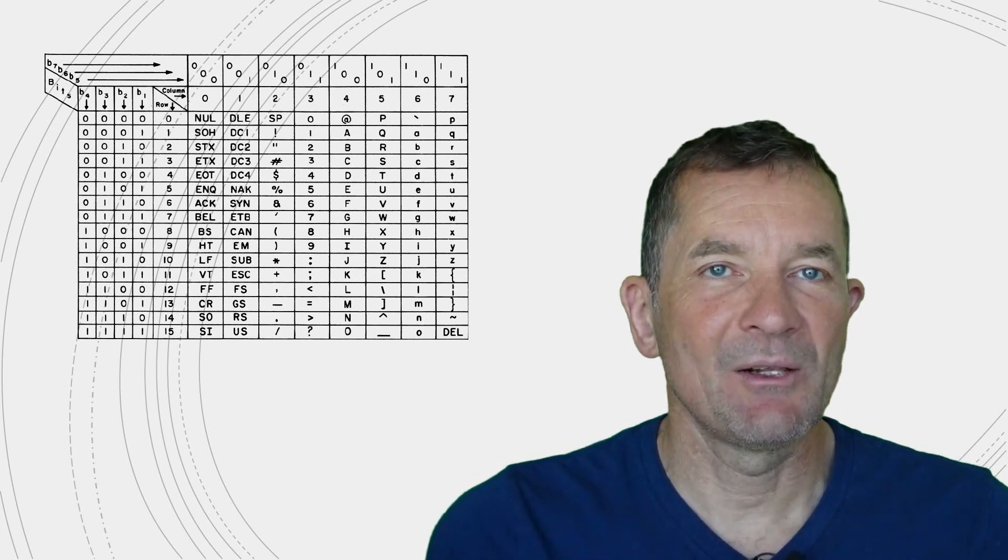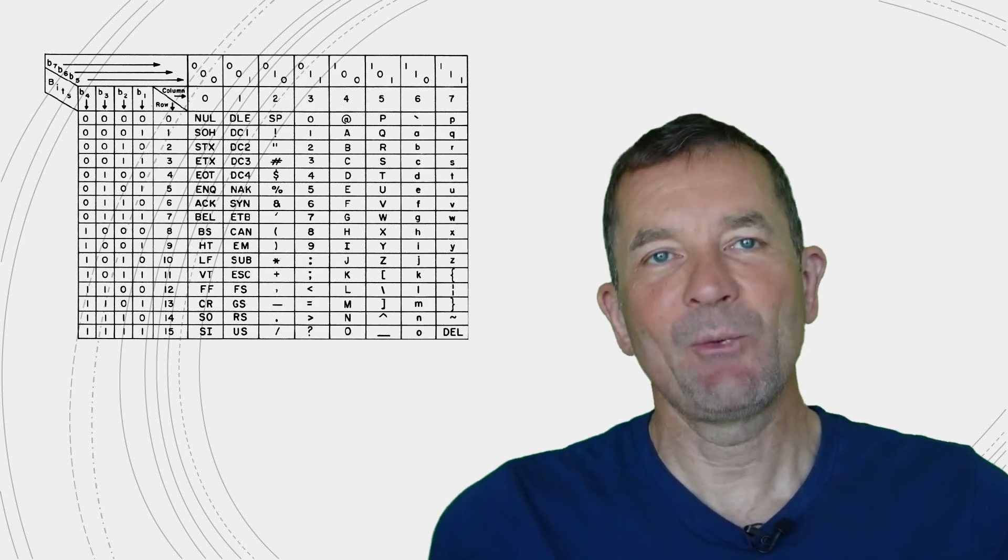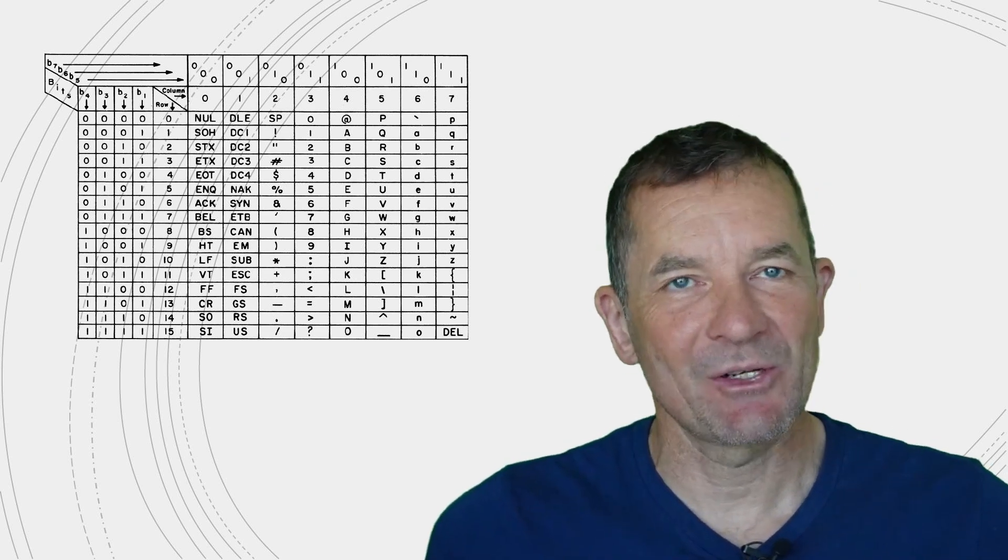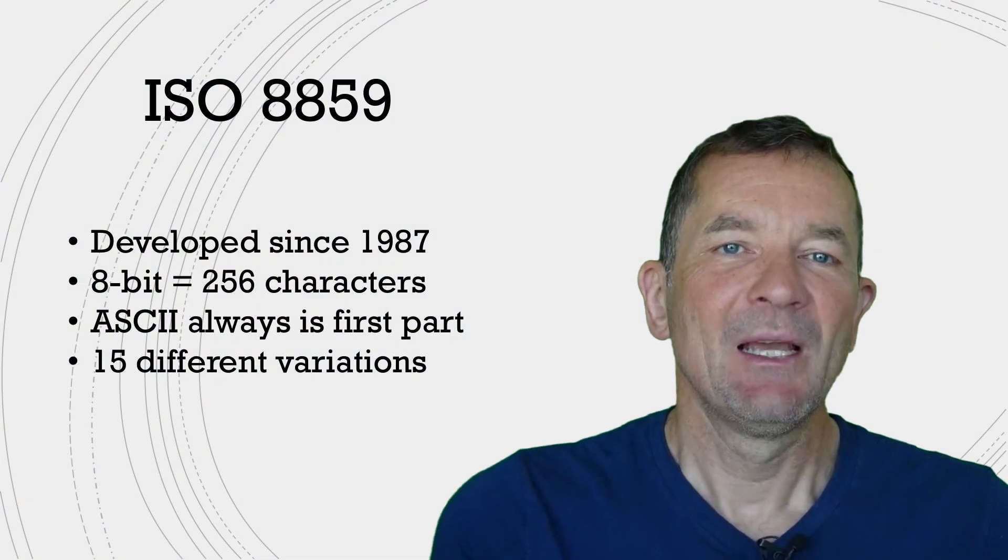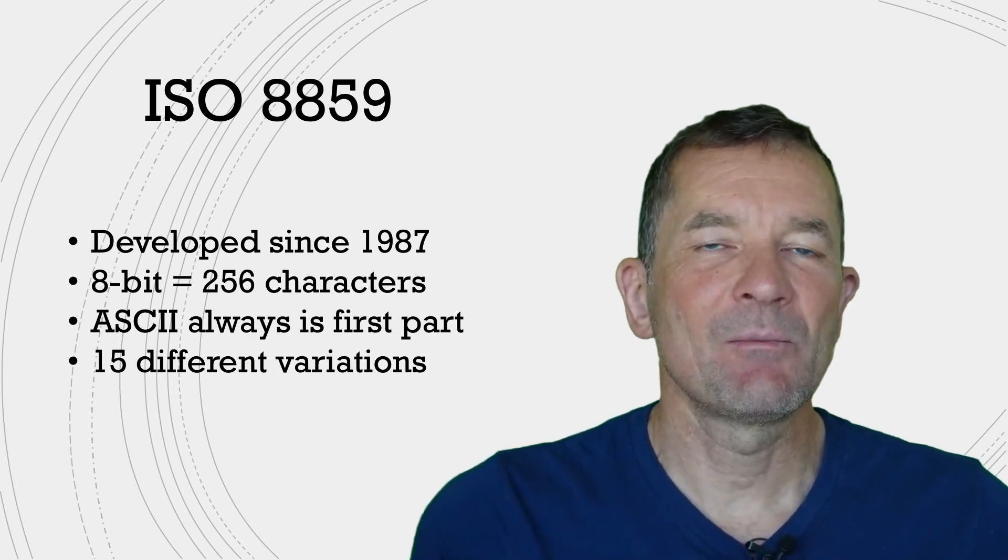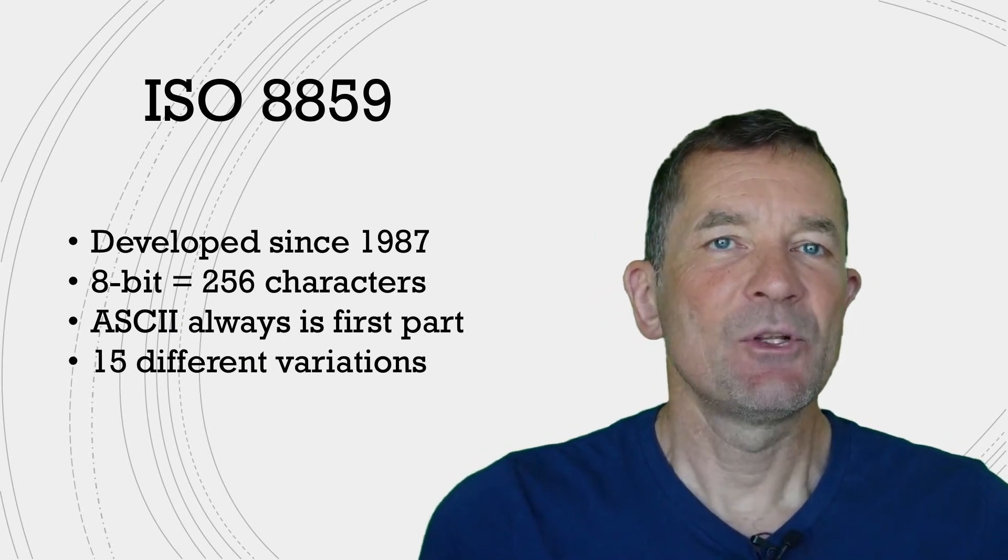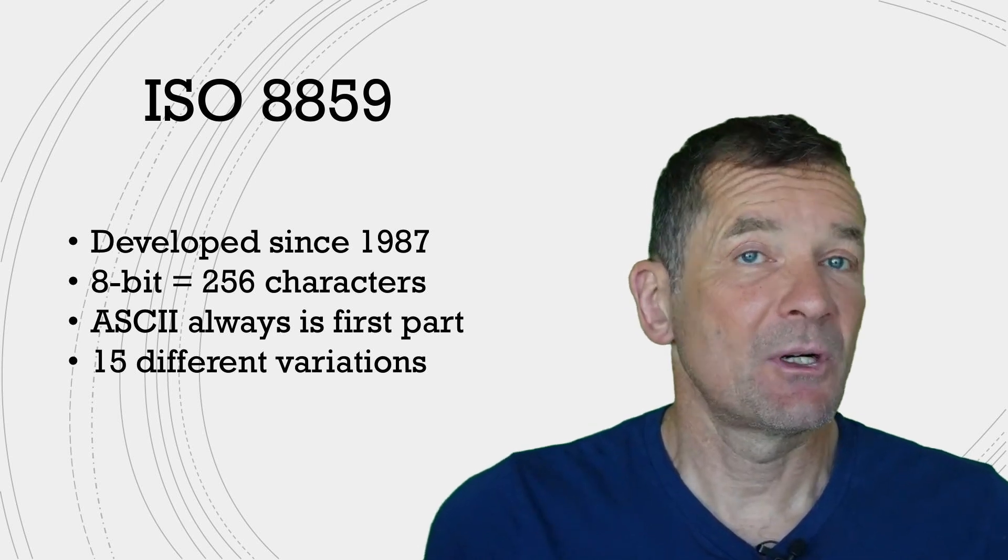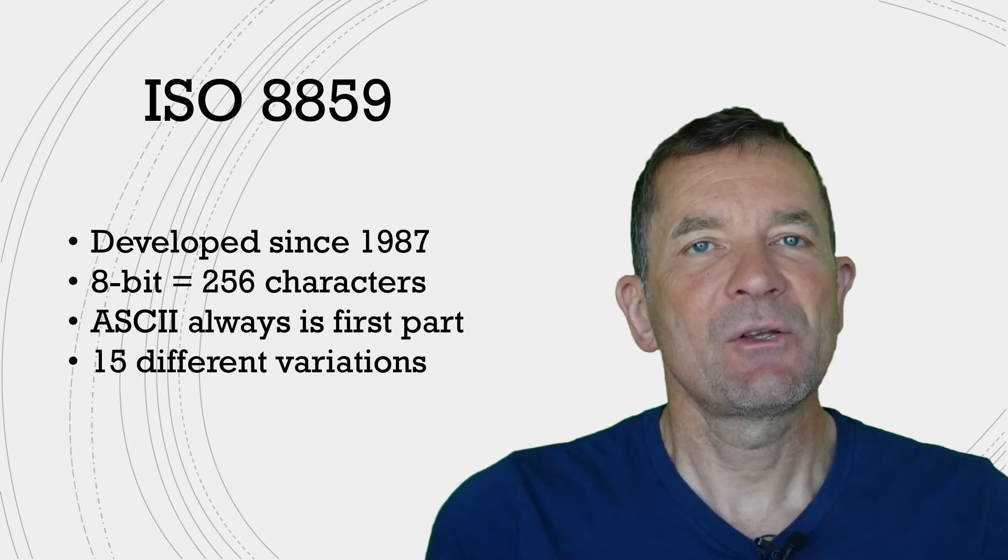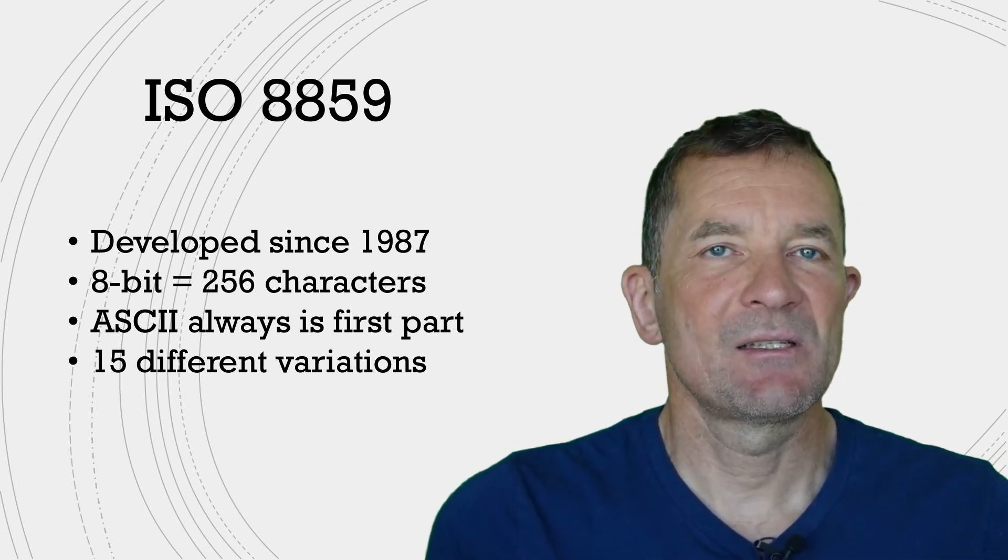And this already, for example, didn't work well for countries such as Germany, where I'm from, where we have some special characters such as the umlauts. Now this gave rise to something called ISO 8859, which is a standard for character representation. It also has been around for quite a while, since 1987.